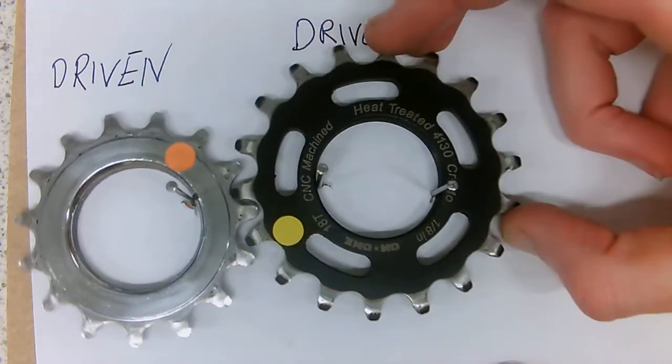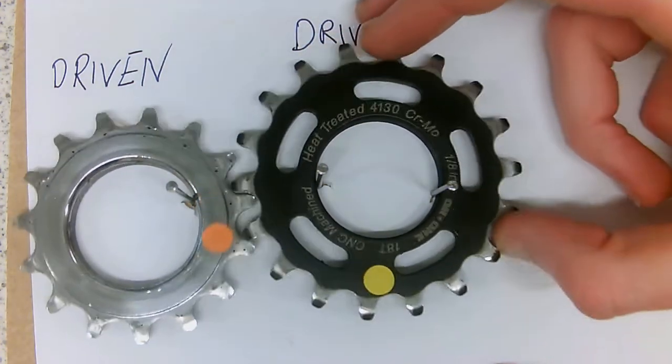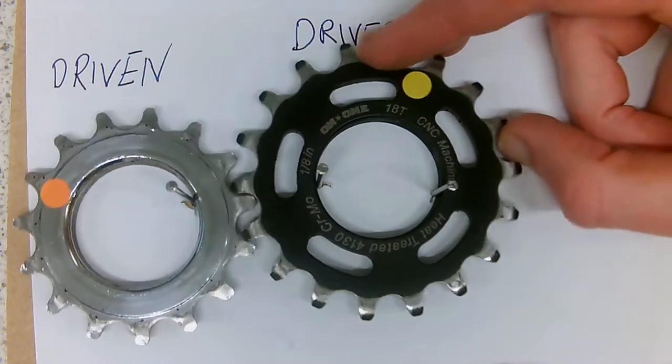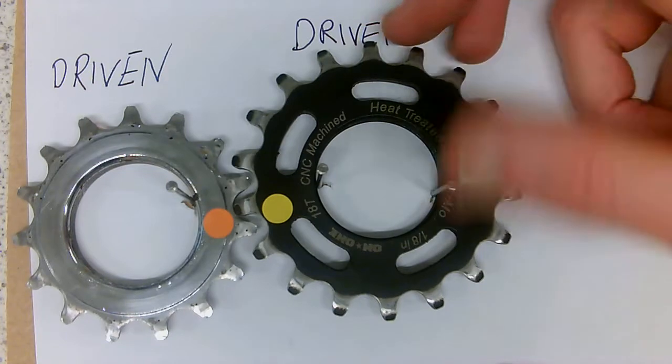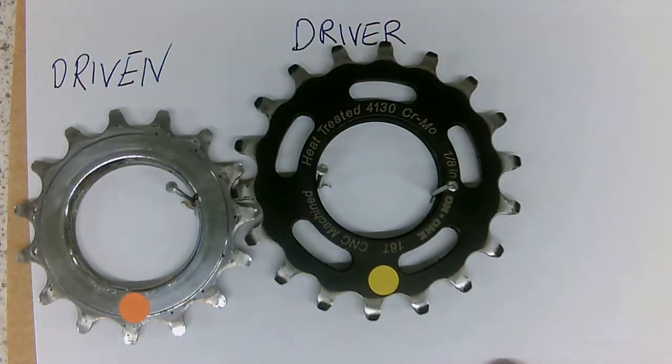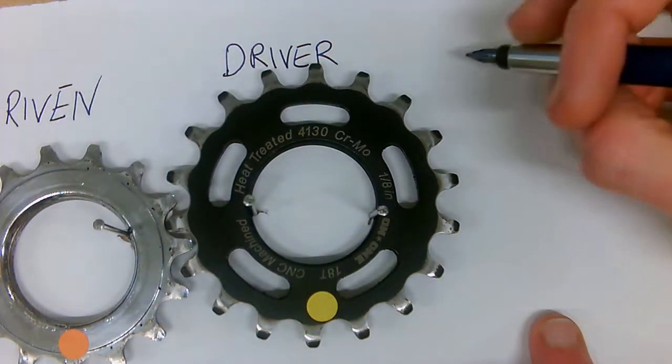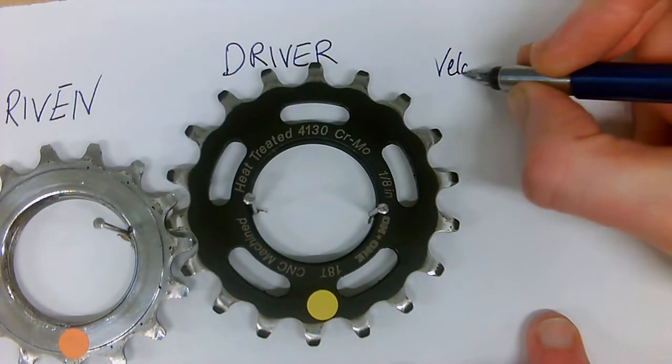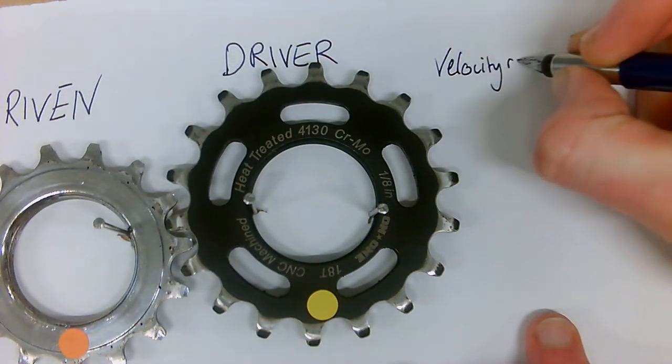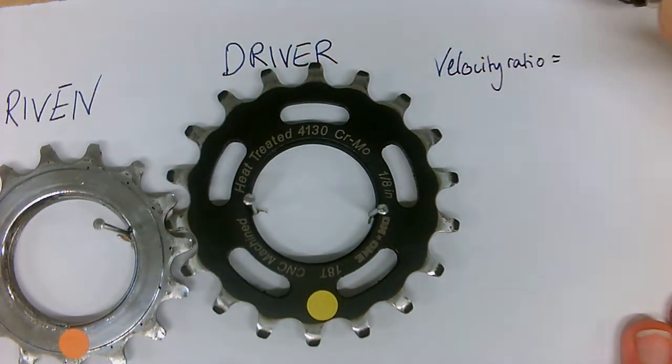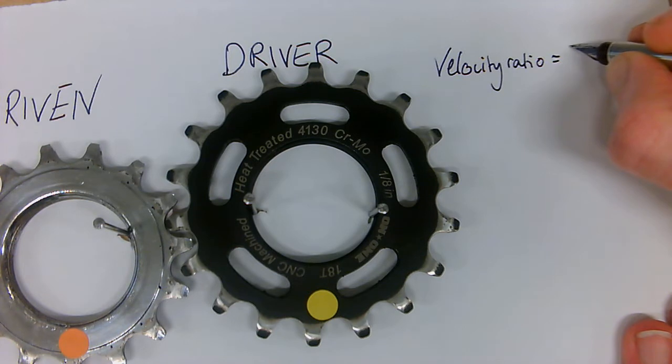Now this gives us the fact that our small gear is turning faster than our large gear gives us something that we would call the velocity ratio. Now the velocity ratio is rather simple. It is how fast our output gear is rotating compared to how fast the input gear is rotating.